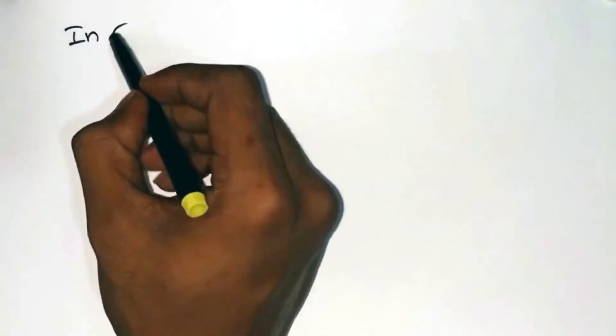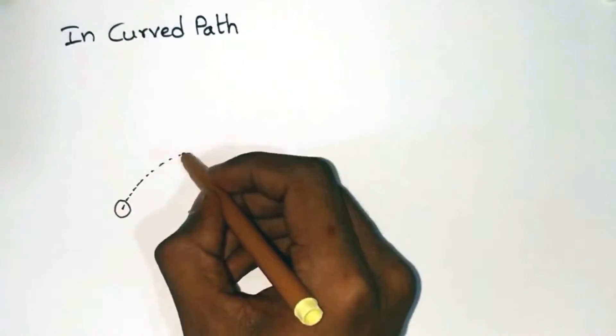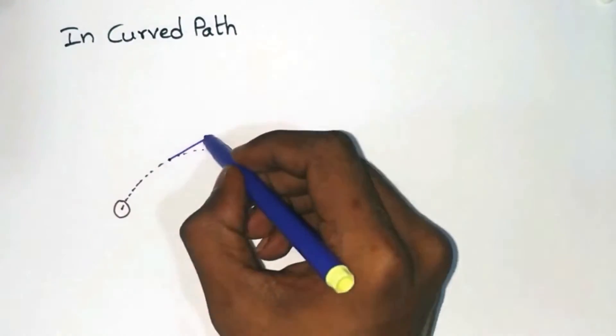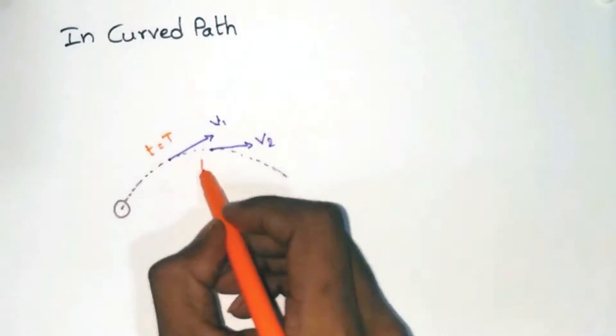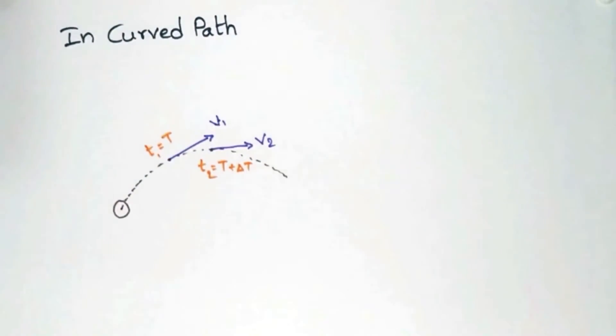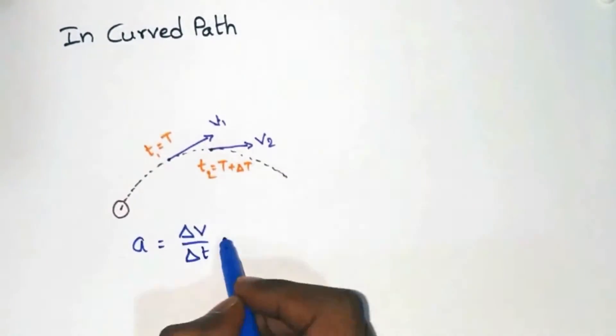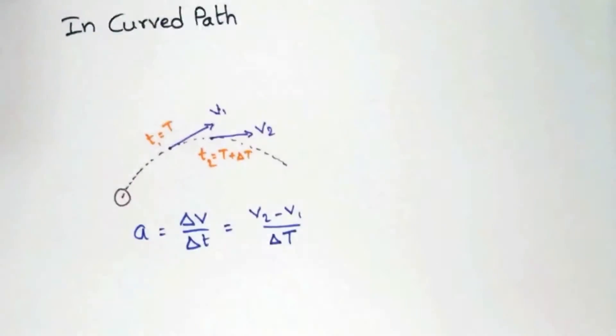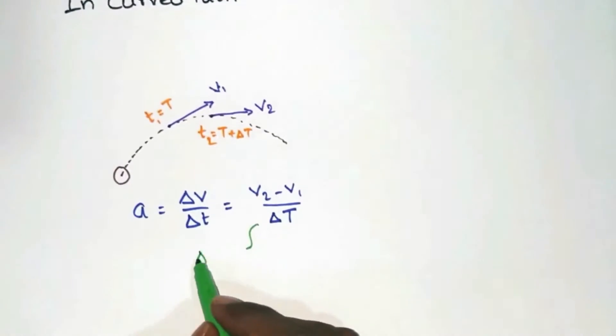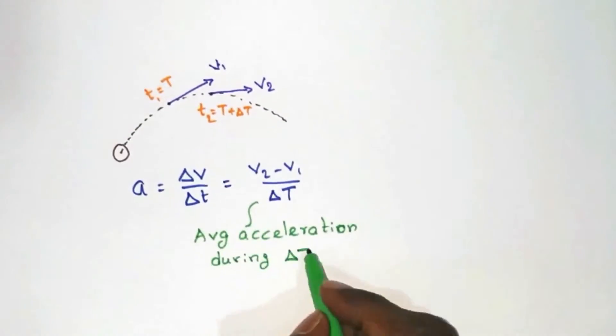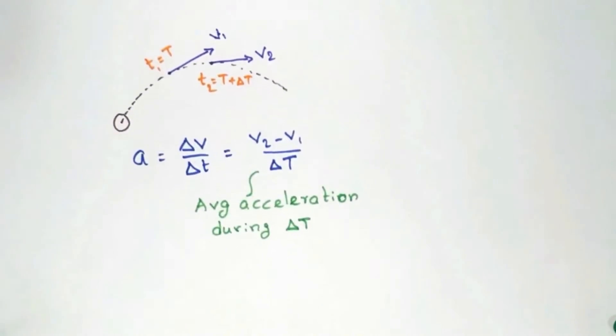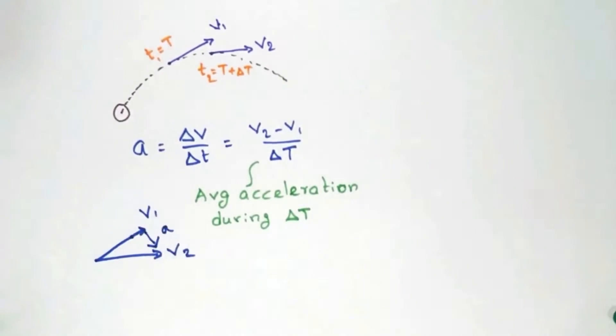Now let's consider a case in which an object is moving along a curved path and consider the velocity change in a small duration of time, delta t. So the acceleration is given by delta v by delta t, which equals v2 minus v1 by t2 minus t1. This acceleration gives the average value in the time delta t. So in order to find the direction of acceleration, we have to use vector subtraction.